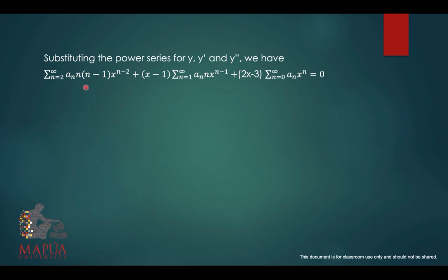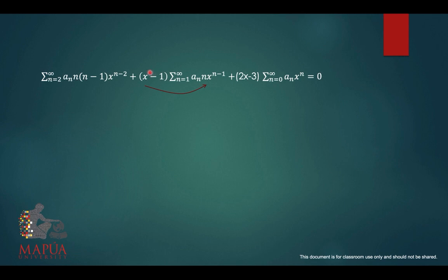We now have y double prime, y prime, and y with their respective coefficients (x minus 1) and (2x minus 3). Distributing, we multiply x by the y prime series and then negative 1 by the same series, followed by 2x times the y series and negative 3 times the same series.